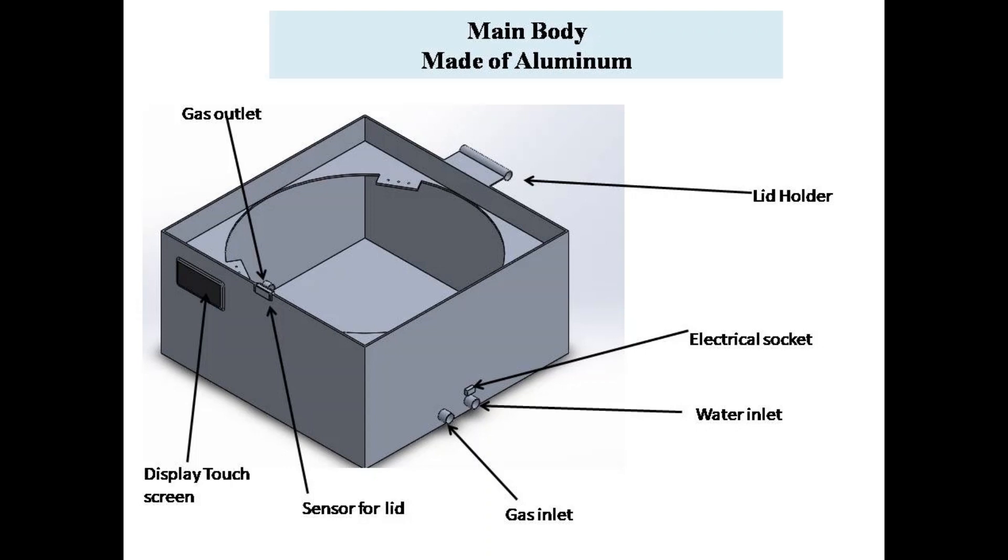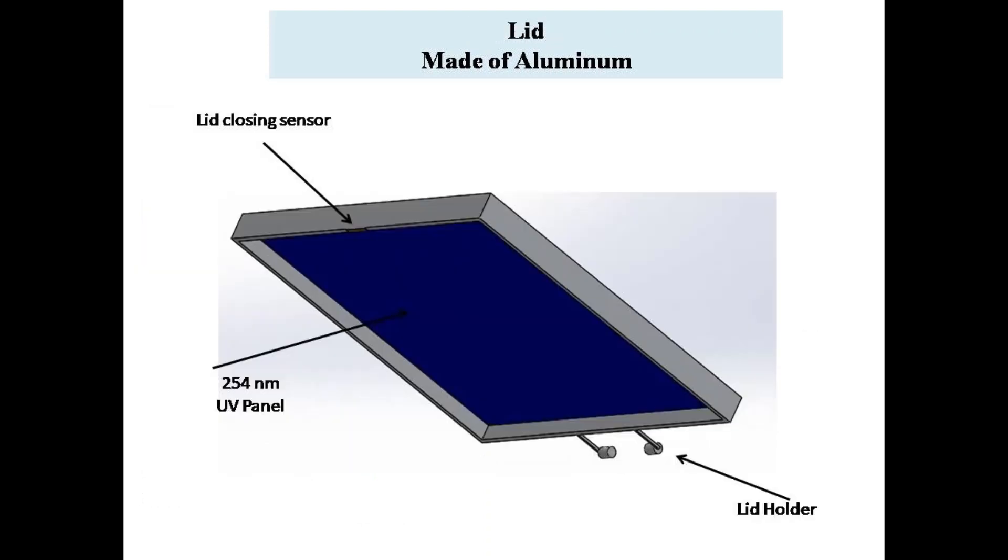The assembly of inner and outer drum is packed in main body. It has provision for gas and water inlet outlet, electrical socket, display touchscreen that displays various cycles in processes and can be used to set cycles. The main body is made of aluminum that avoids any leakage of UV in outer atmosphere.